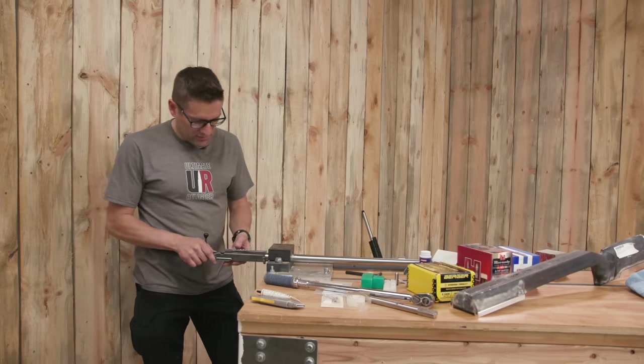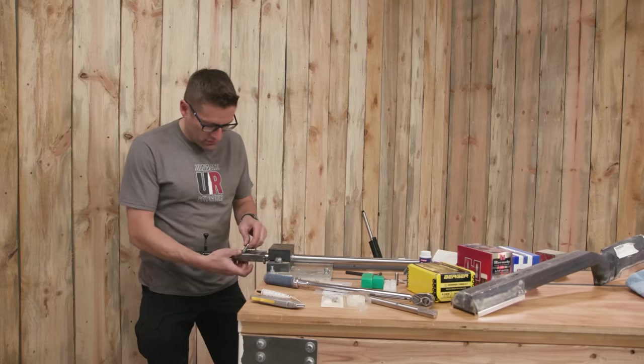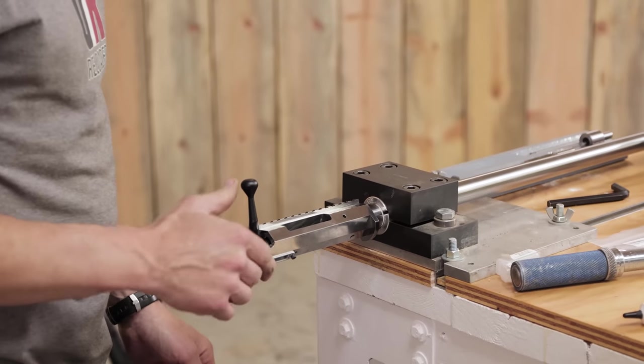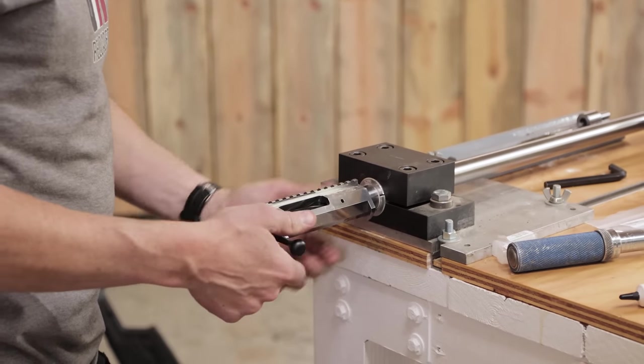So, I spun this around so that the ejection port is kind of facing up. That's going to put our extractor in the right spot to drop the go gauge in. Alright, so here's one moment of truth. The handle should go down as it does. Okay.